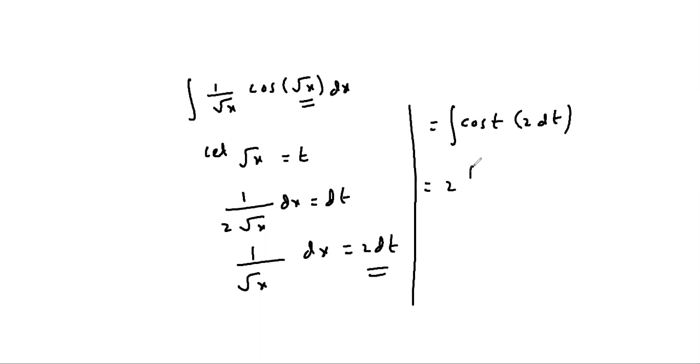Write 2 outside of integral: 2 into integral cos t dt. Excellent. Perfect answer, listener. Nice. Integral cos t is sin t plus c.